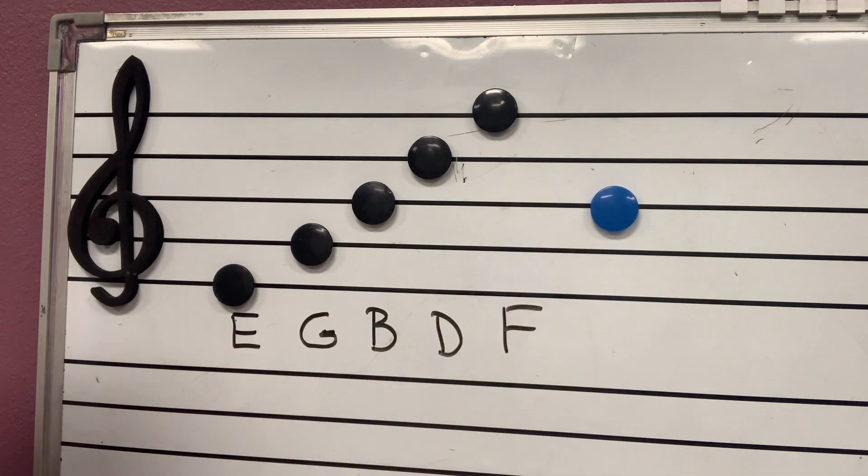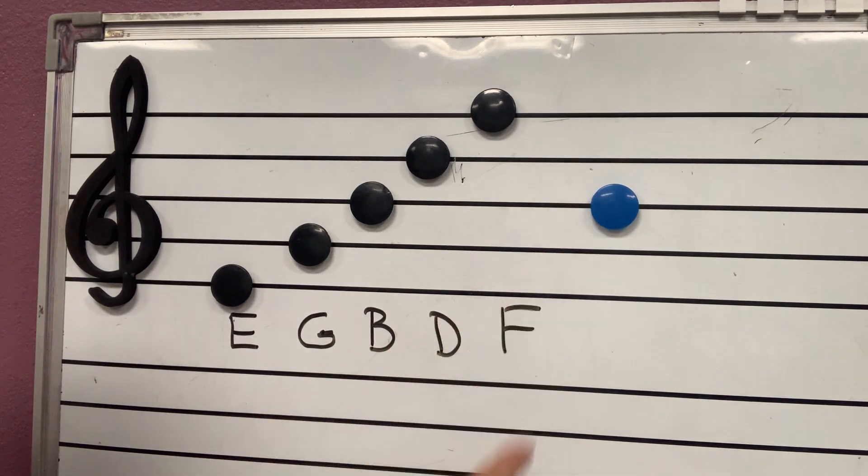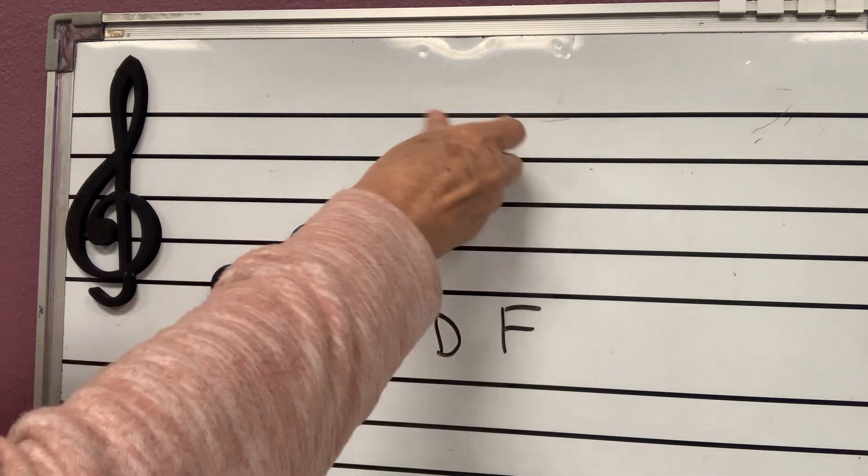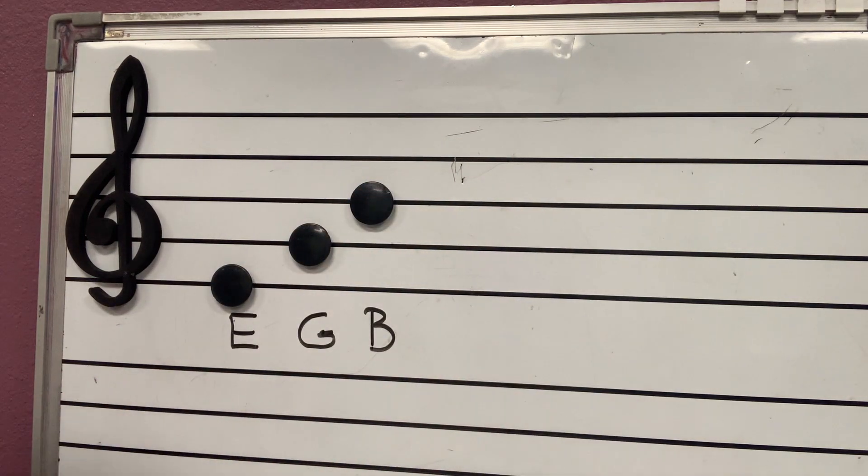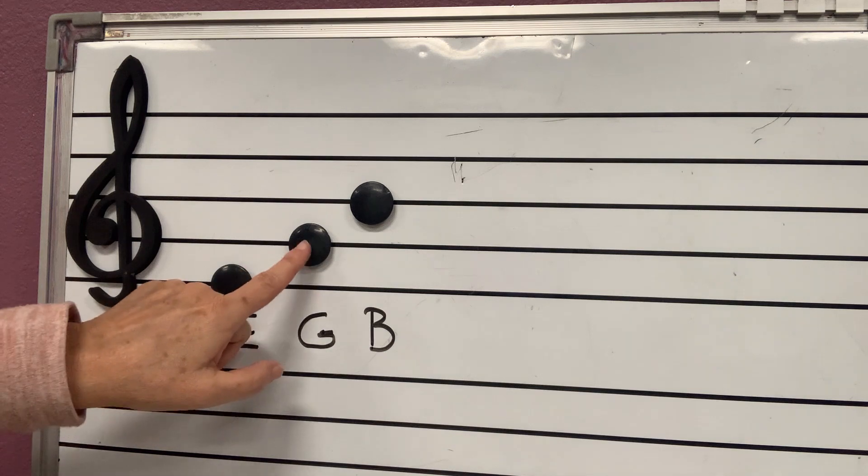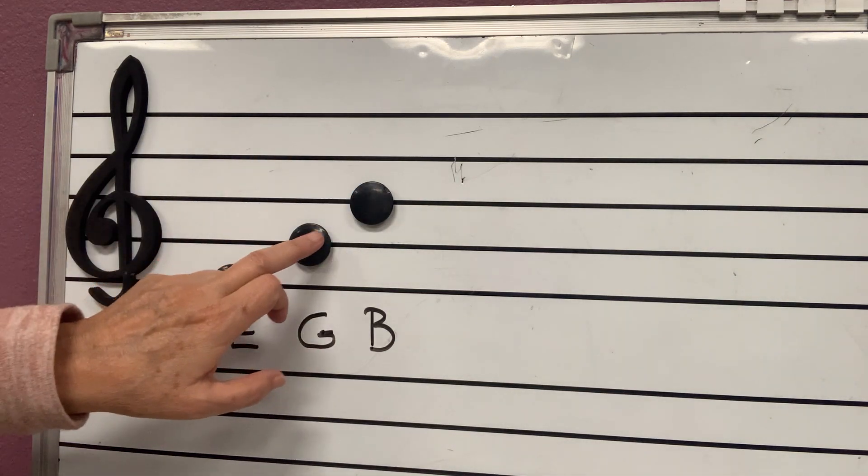And let's say you see this one. Who's that note? Is that a line or a space? It's a line. What do I say? Every girl bakes. Oh, that's a B. So, that will be easy to remember. Now, for now, let's forget about delicious fudge. All I want you to be very good at are E, G, B. E, G, B. Every girl bakes.